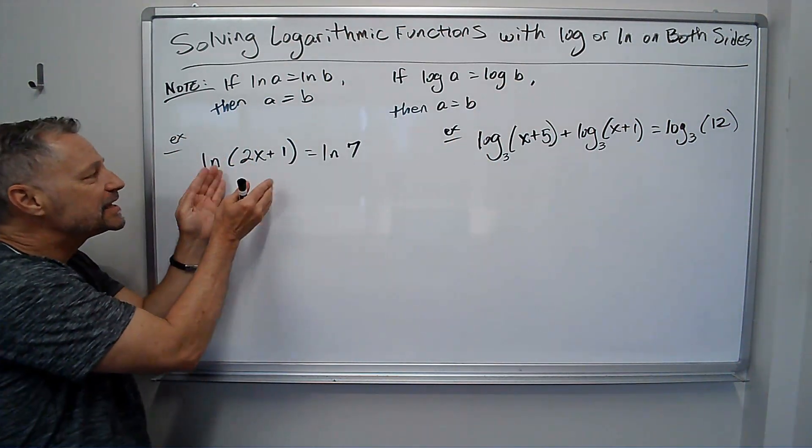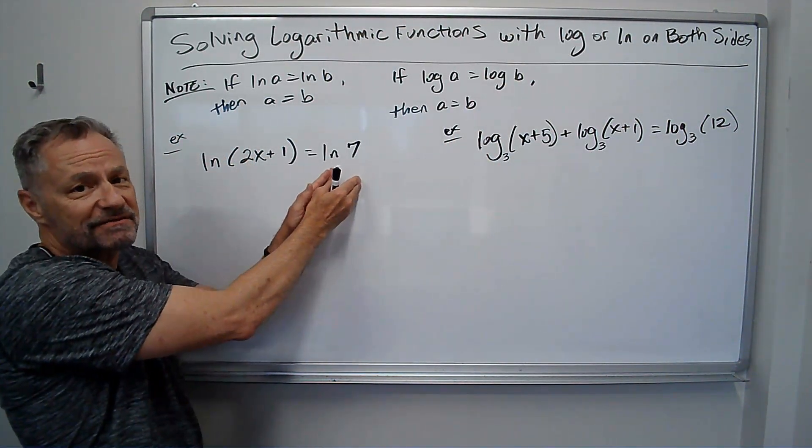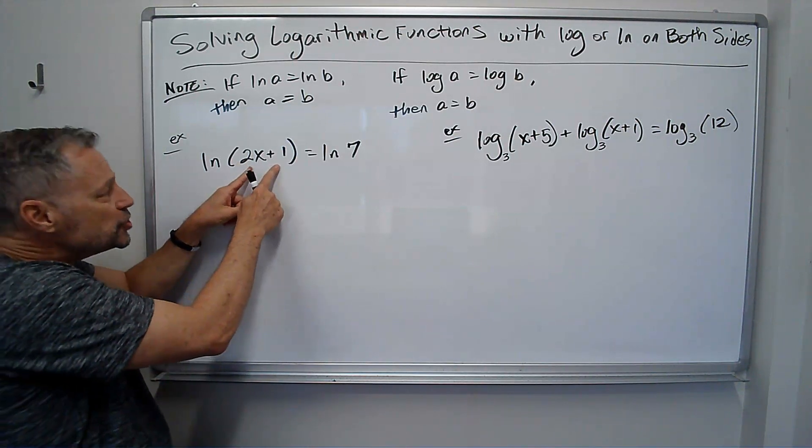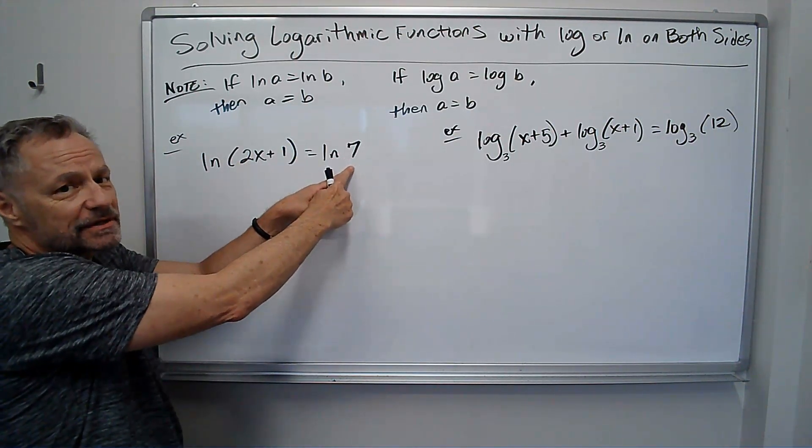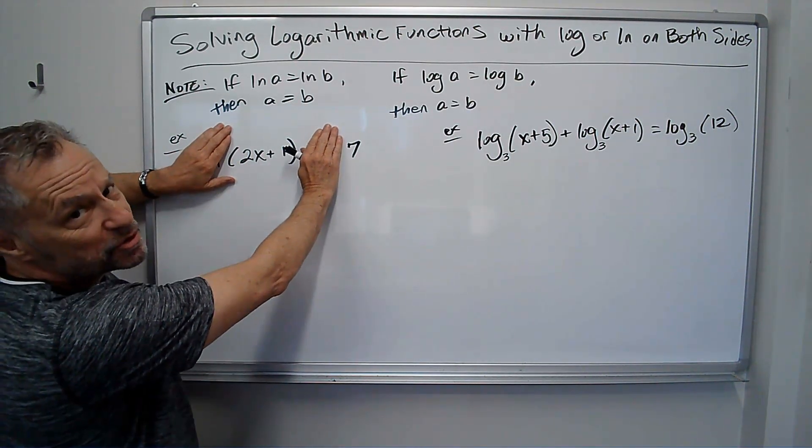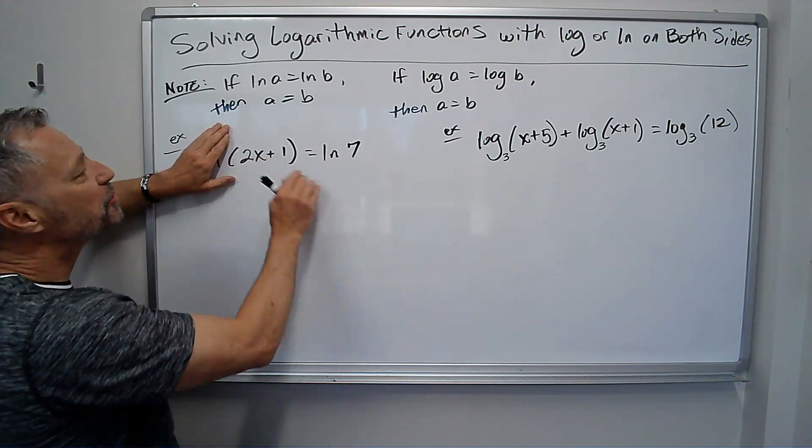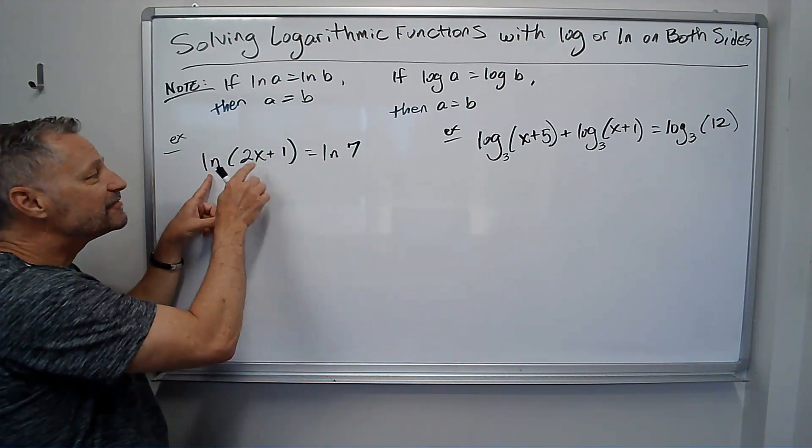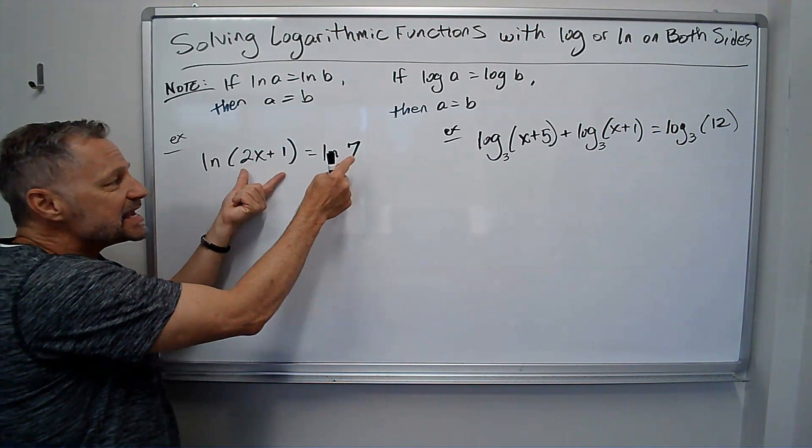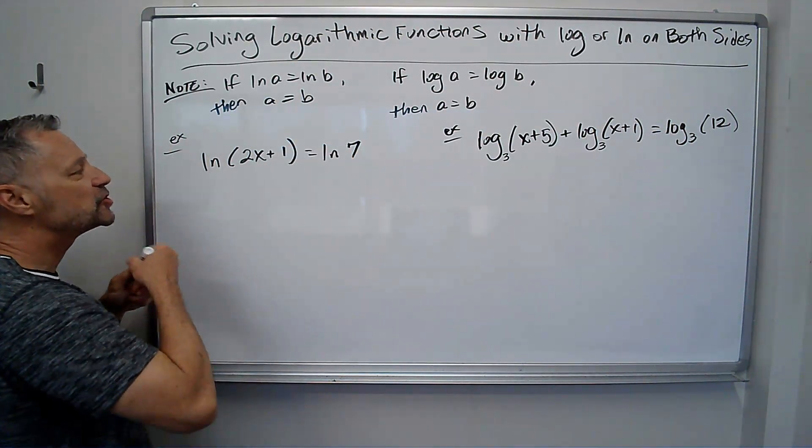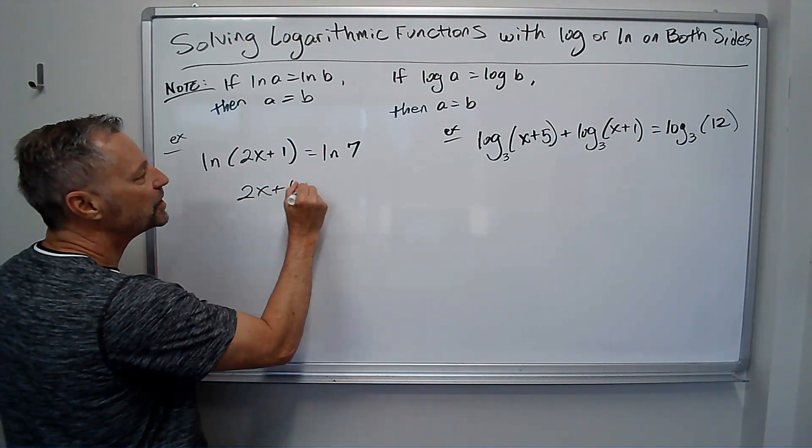So if I've got ln of 2x plus 1 equals ln of 7, essentially the 2x plus 1 has to equal 7. And it's not like I'm dividing both sides by ln, but I'm using this property that says, hey, if ln of a equals ln of b, a equals b. So I can just go directly to 2x plus 1 equals 7.